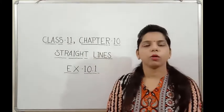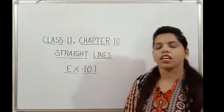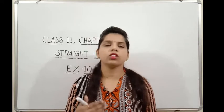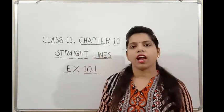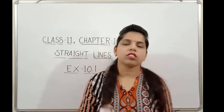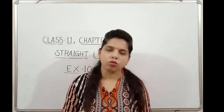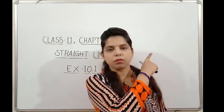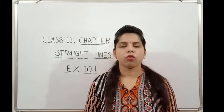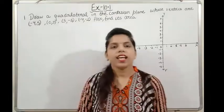Hello everyone, welcome back to our YouTube channel Alisha Maths Classes. Today I have taken the topic of Class 10/11th Chapter 10: Straight Lines. In our previous video I discussed the introduction of this chapter regarding coordinate geometry, the slope of lines, how to find the slope when an angle is given or when the line passes through two points, and the relationship between slopes of parallel and perpendicular lines. Students who have not watched that video, please watch it first — the link is in the description. Without wasting time, let's start with Question Number 1.